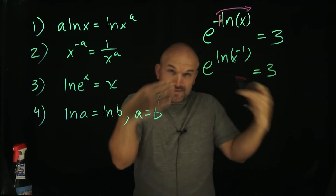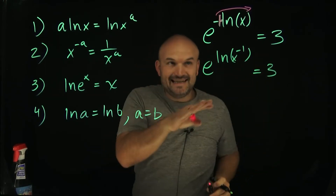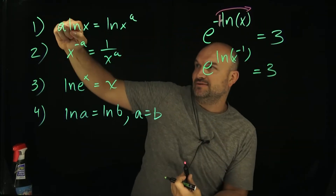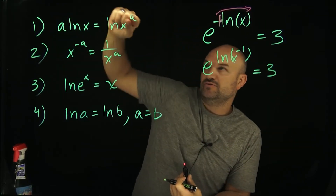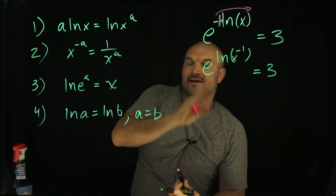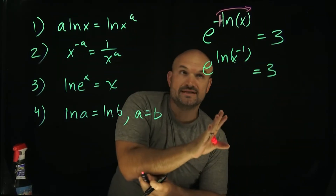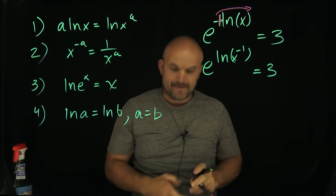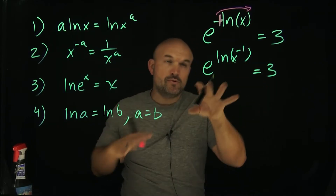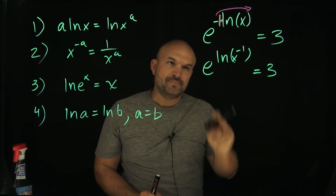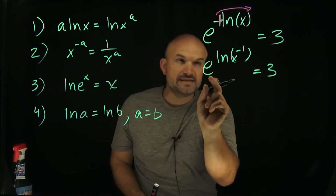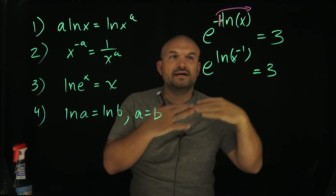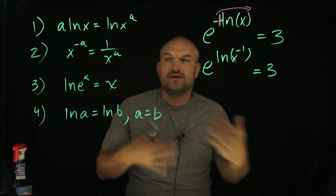Now I have an exponential equation: e raised to the ln of x to the negative first power, equal to 3. You take whatever number is in front and rewrite it as a power. Now this is written as an exponential equation, and we want to get rid of the base having a power. So if we want to get rid of the power, what we're going to do is take the log of both sides.